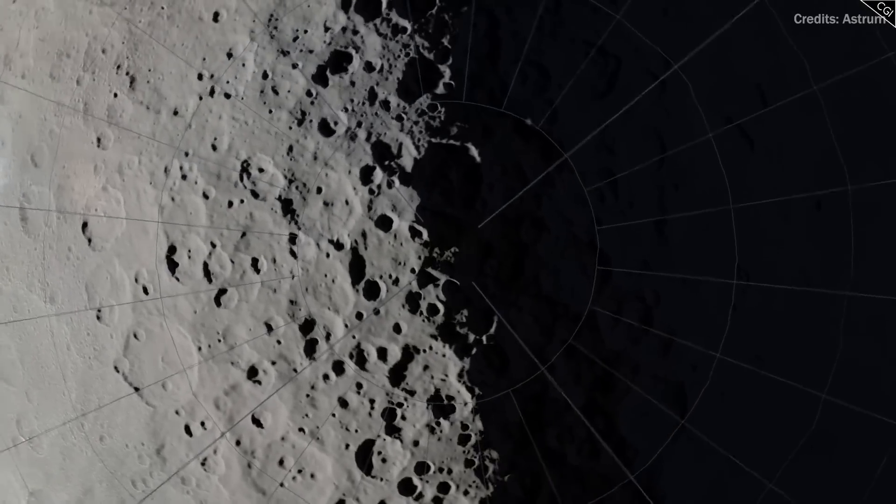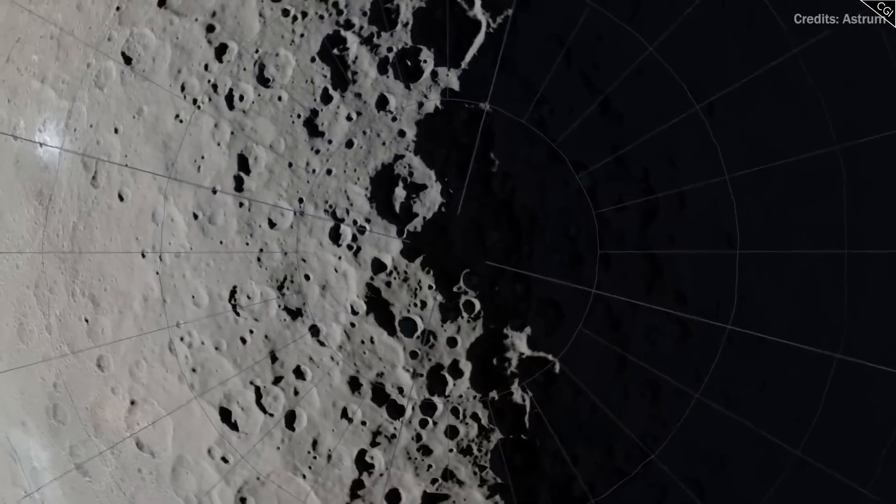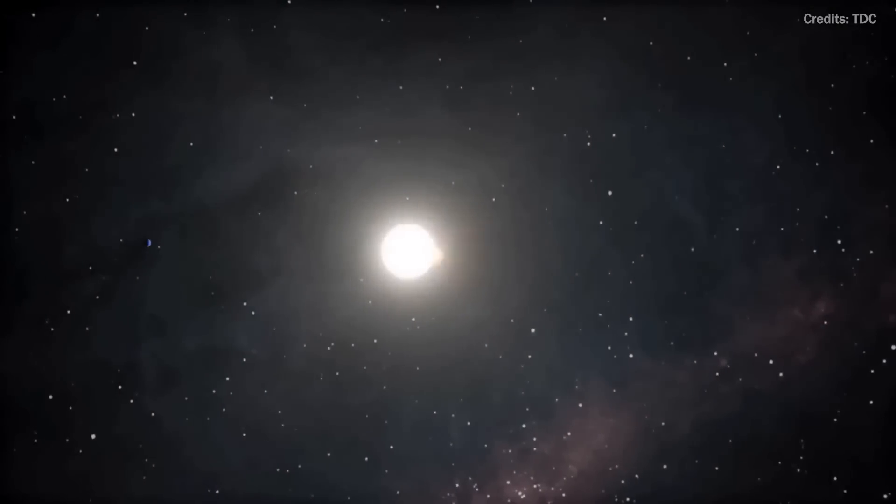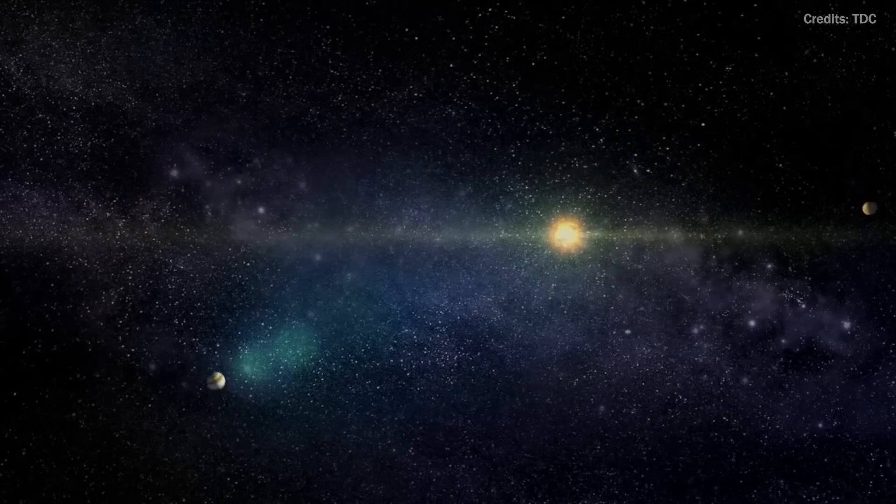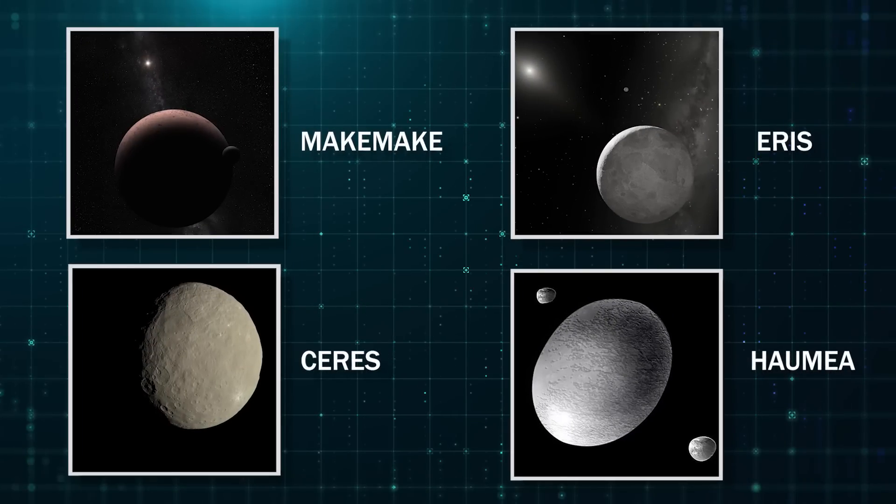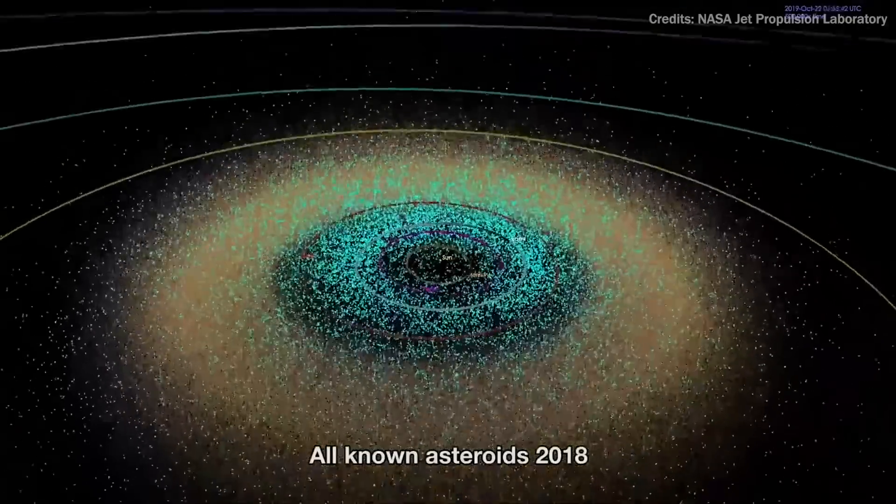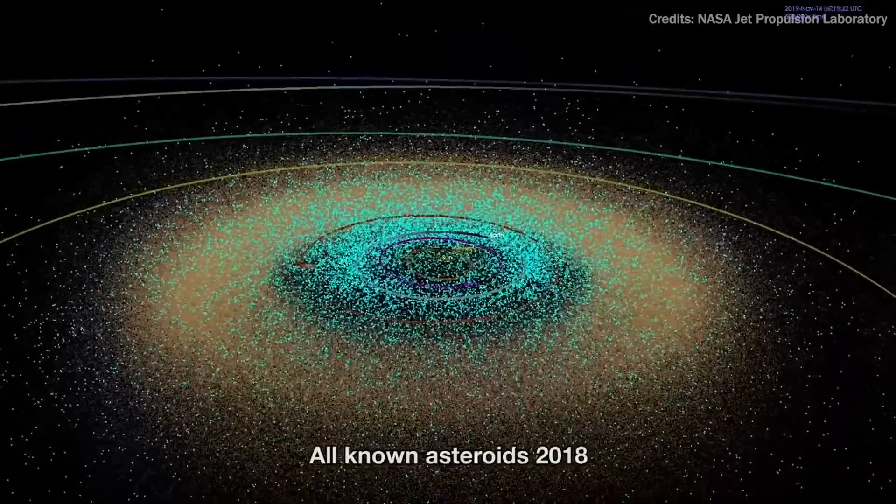He also said that the asteroid Ceres should also be considered a planet. Basically, to him, anything that has enough gravity to make itself round should be considered a planet. Stern believes that people should get used to the idea that our solar system contains dozens of planets, and that the floodgates are now open, and that in 10 years, we'll have a slew of these little guys.